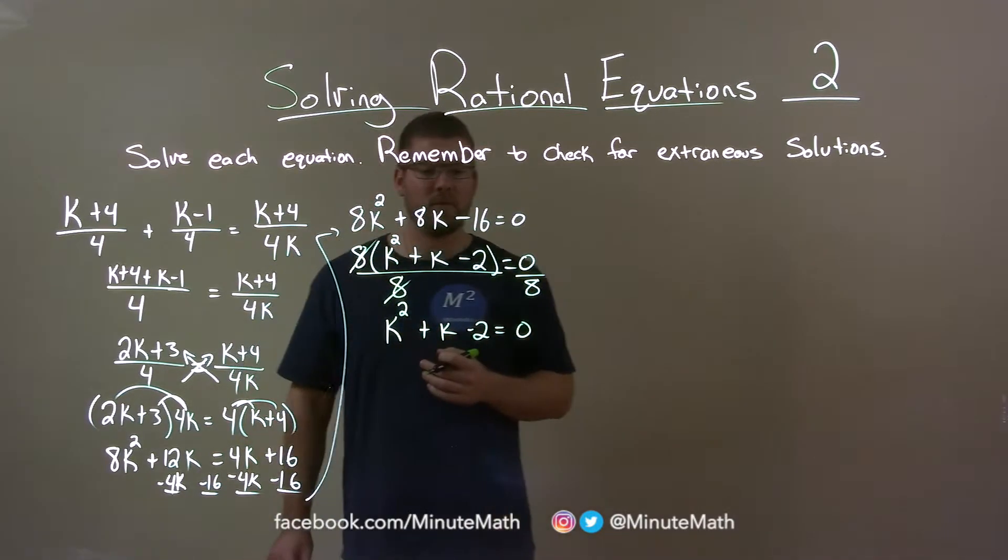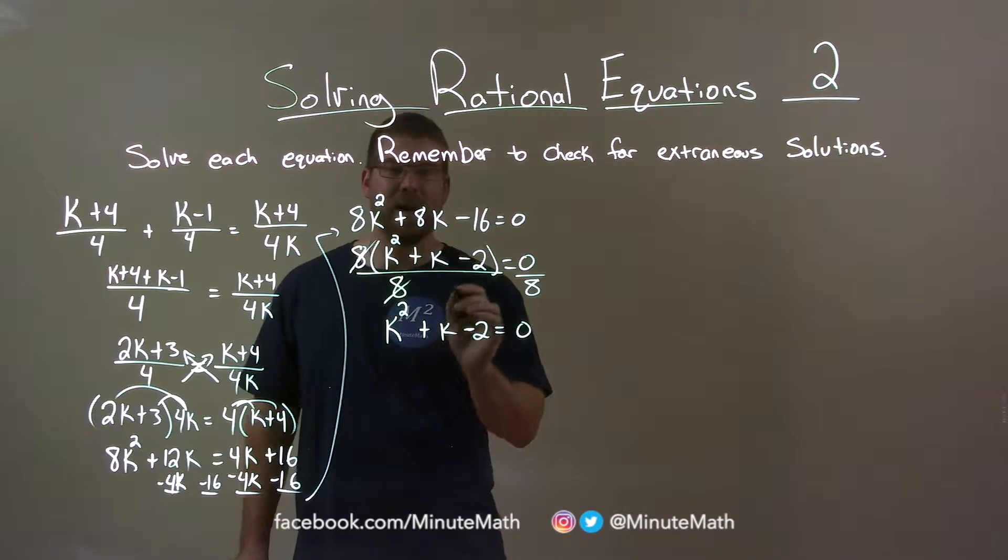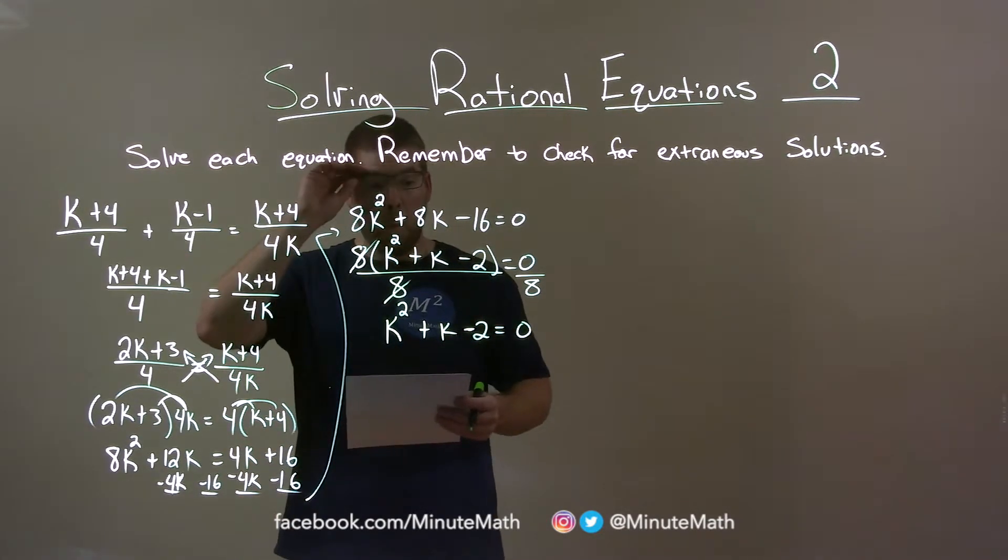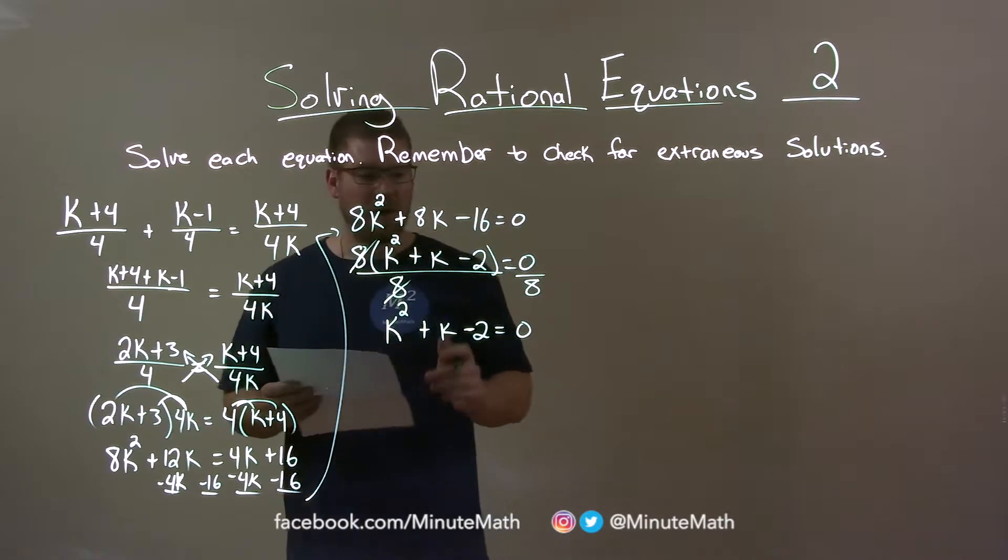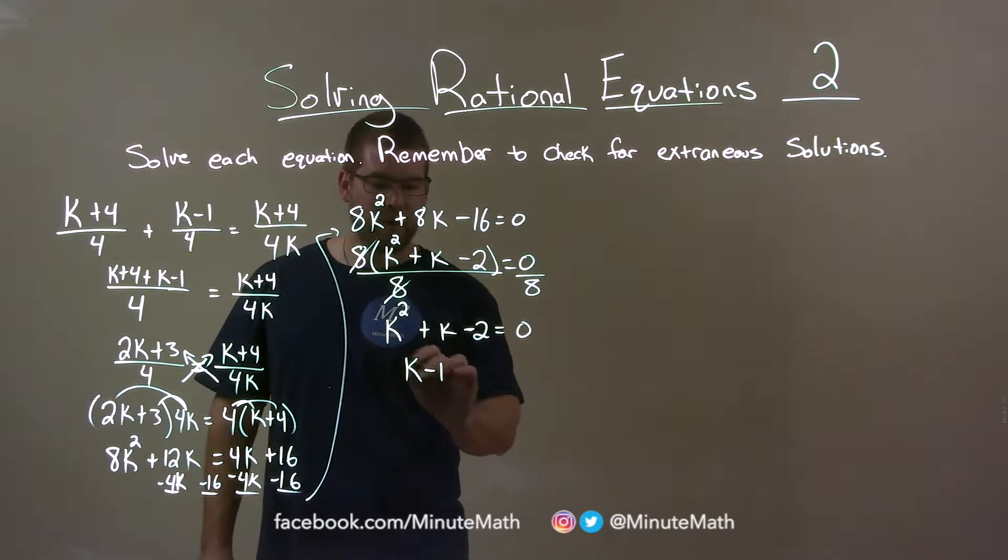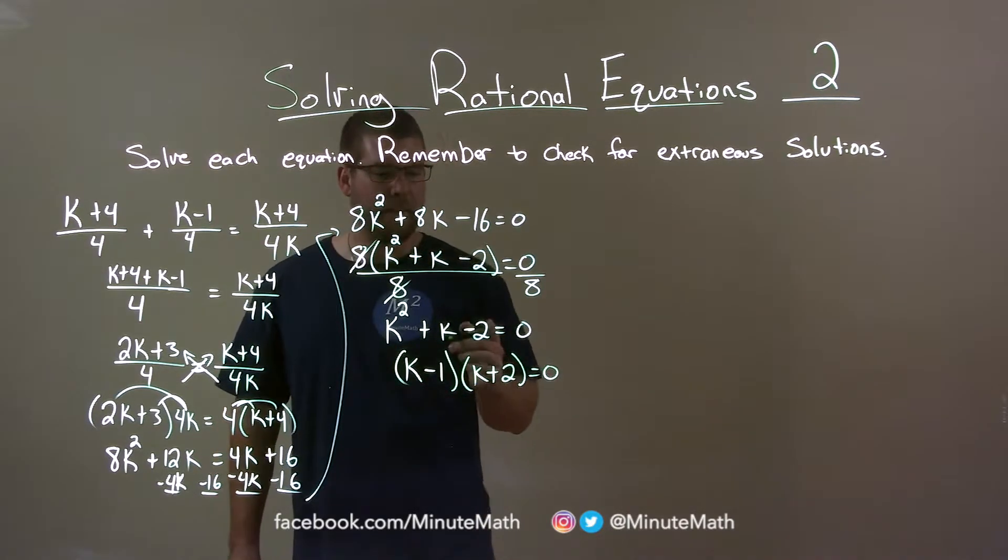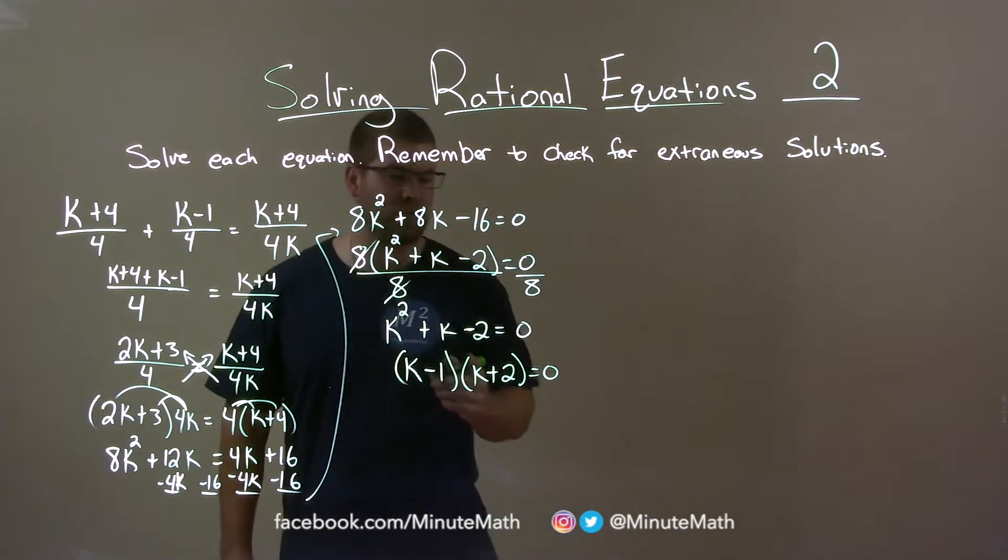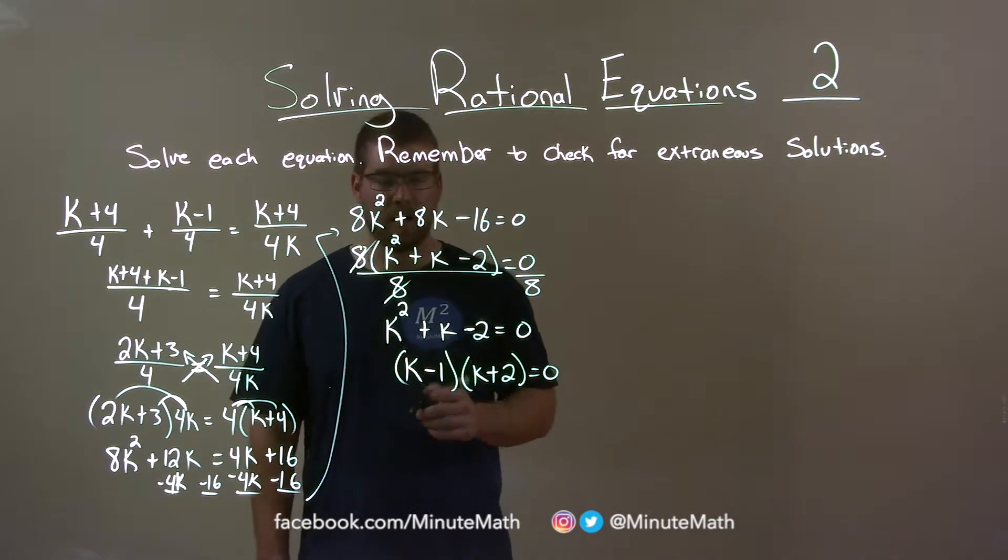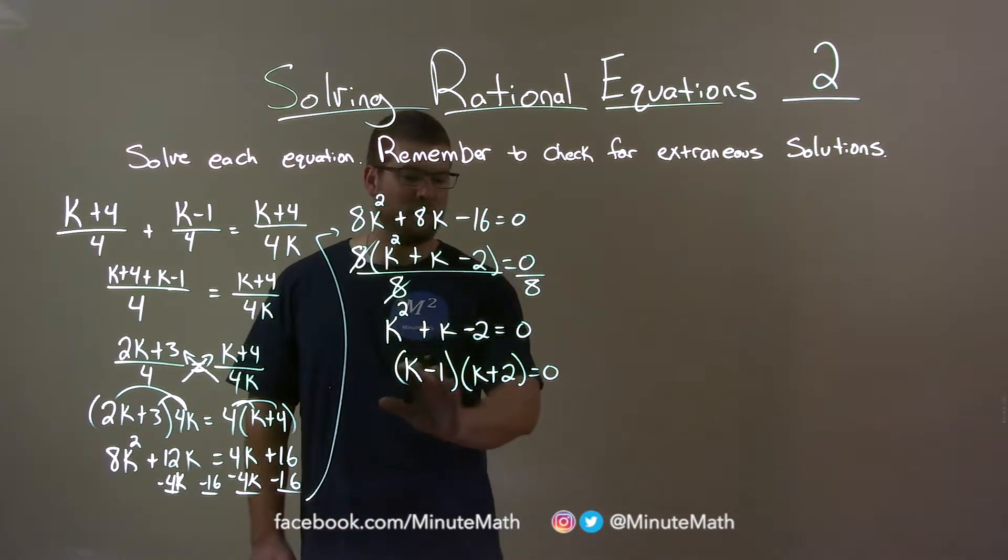So we ask ourselves this question. What two numbers multiply to be negative 2 but add to be a 1? What two numbers multiply to be negative 2 but add to be positive 1? And that's going to be k minus 1 and k plus 2. It's a positive 2 and minus 1. Those are two numbers that multiply to be negative 2 but add to be a positive 1, the b value that's in front of that k there.